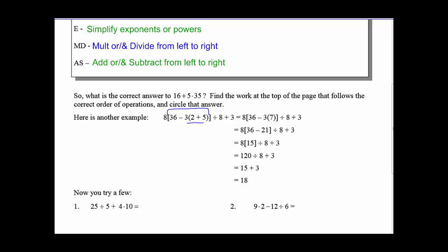Just rewriting everything, we get 8, 36 minus, now 3 times 7, and then divided by 8 plus 3. We still stay within parentheses, but within parentheses we have a subtraction sign, and then we have multiplication. So we're going to need to go 3 times 7 to get 21. Now we can go 36 minus 21 to get 15. And then all that's left is multiplication, division, and addition. Multiplication comes first. So we're going to go 8 times 15 to get 120, divide by 8, which gives us 15, and then 15 plus 3 is 18.